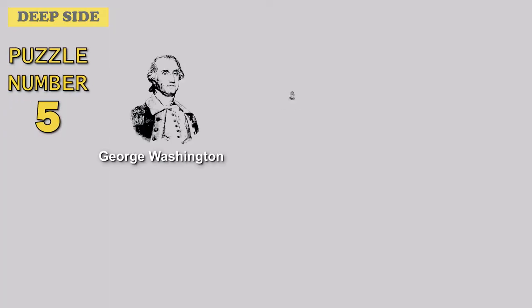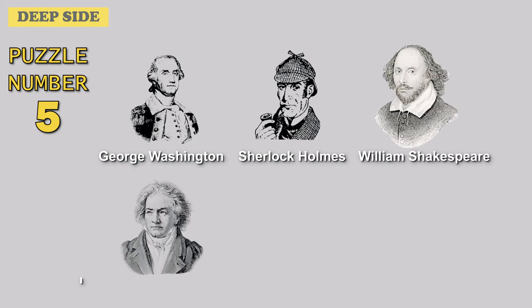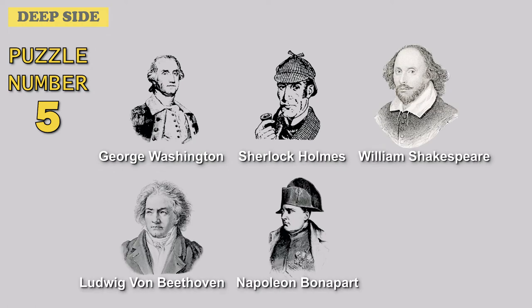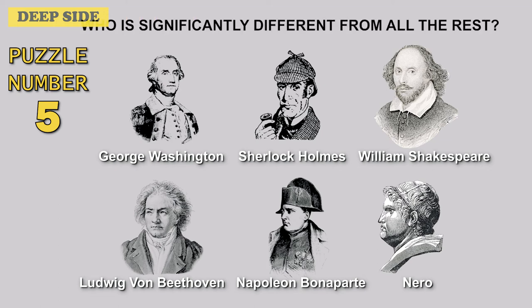Puzzle number 5. George Washington, Sherlock Holmes, William Shakespeare, Ludwig von Beethoven, Napoleon Bonaparte, and Nero. Who is significantly different from all the rest?